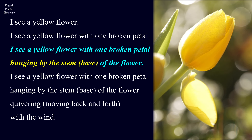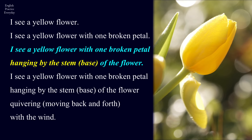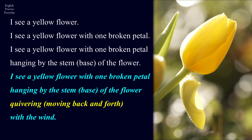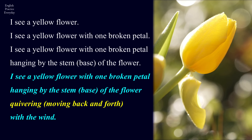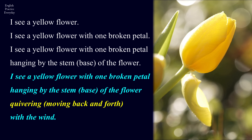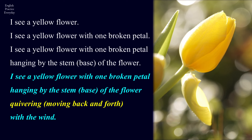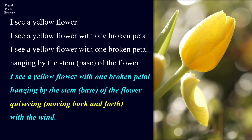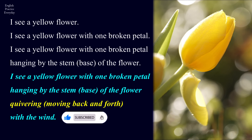I see a yellow flower with one broken petal hanging by the stem, meaning base, of the flower. I see a yellow flower with one broken petal hanging by the stem, meaning base, of the flower, quivering — meaning moving back and forth with the wind.